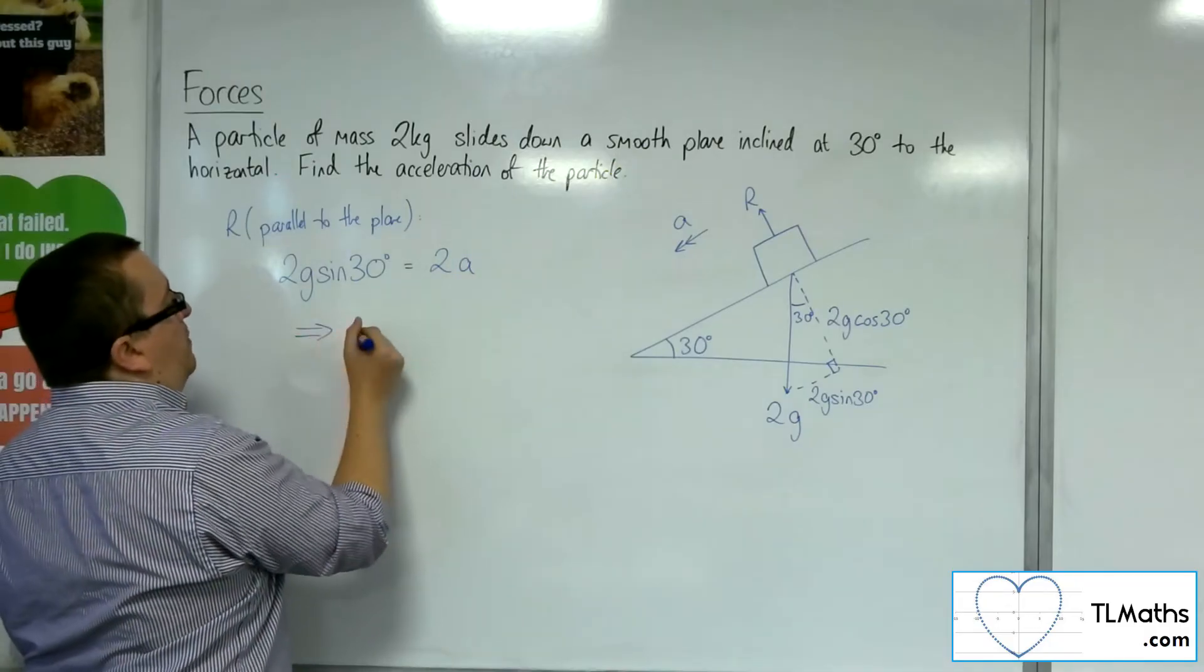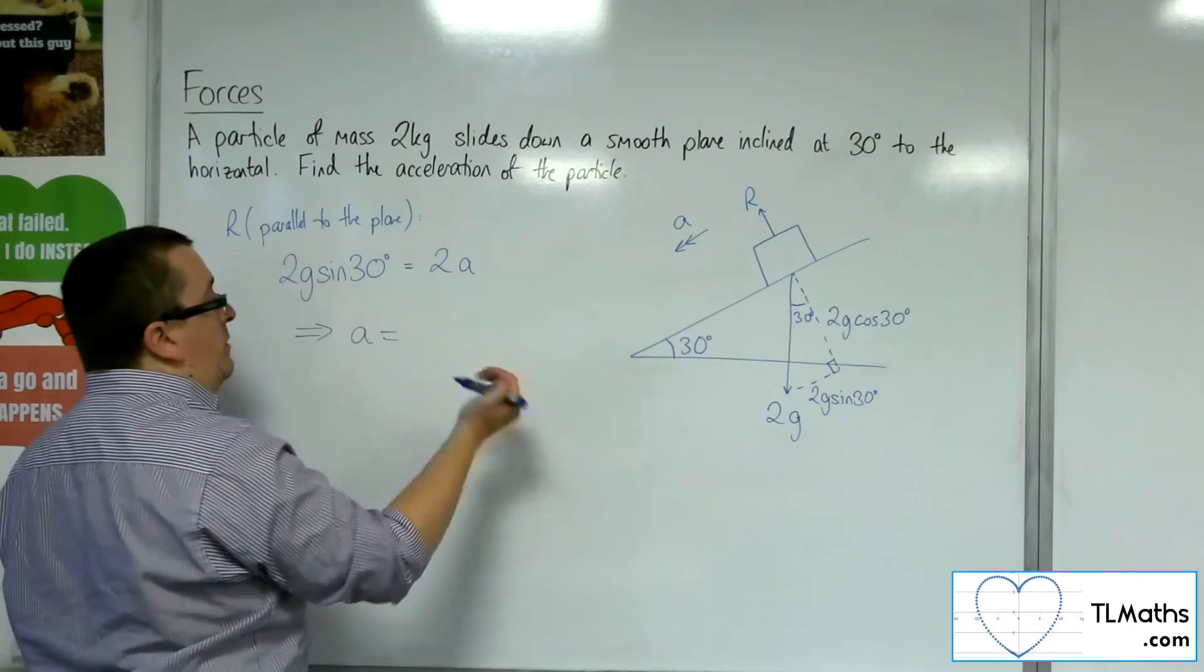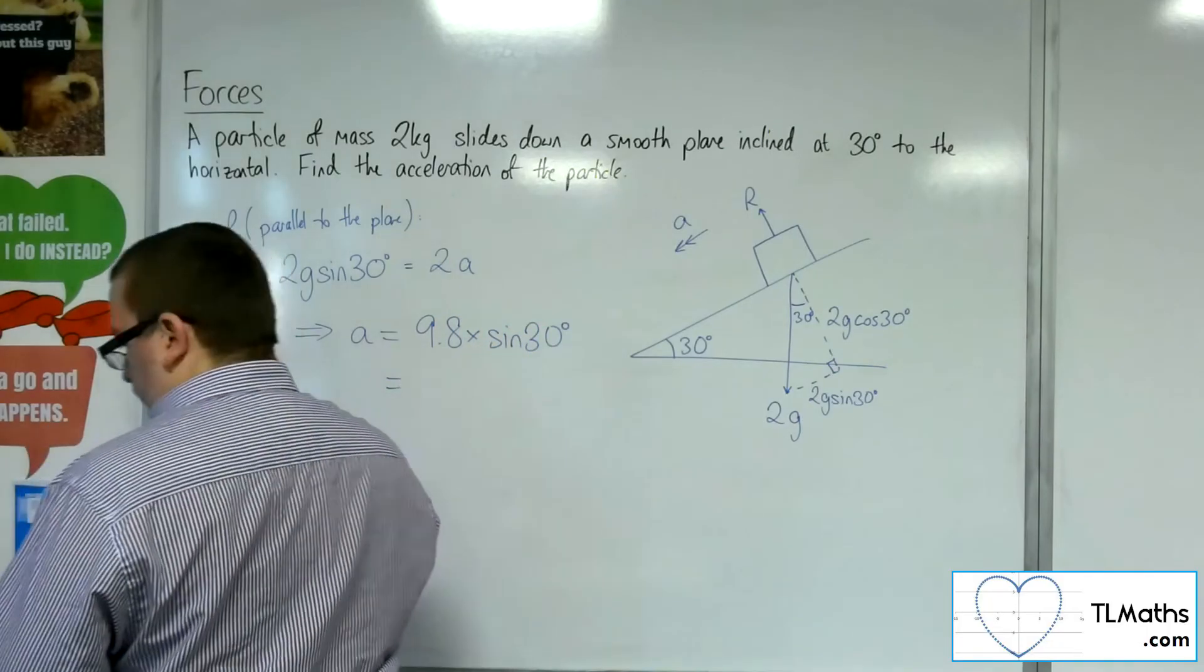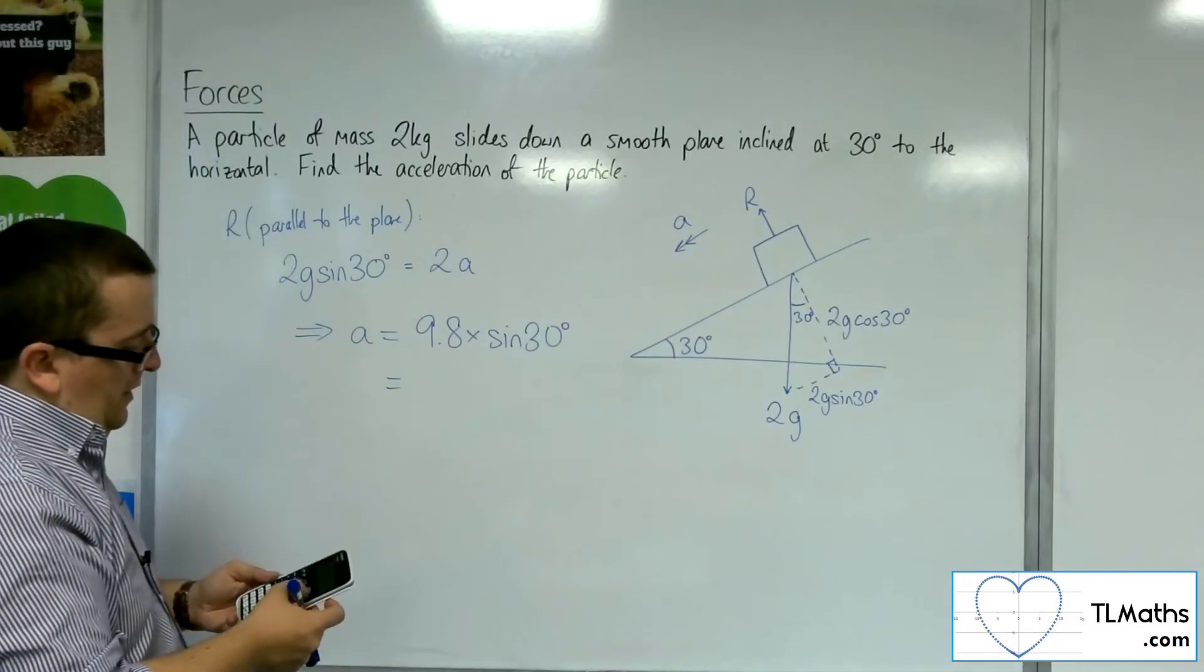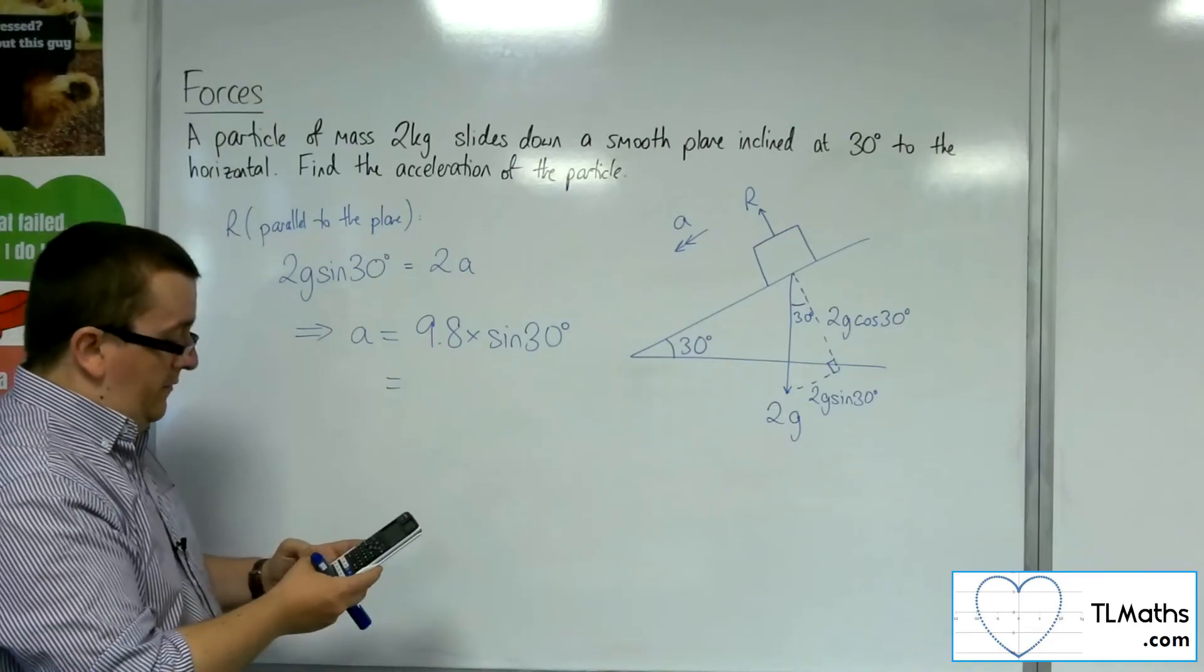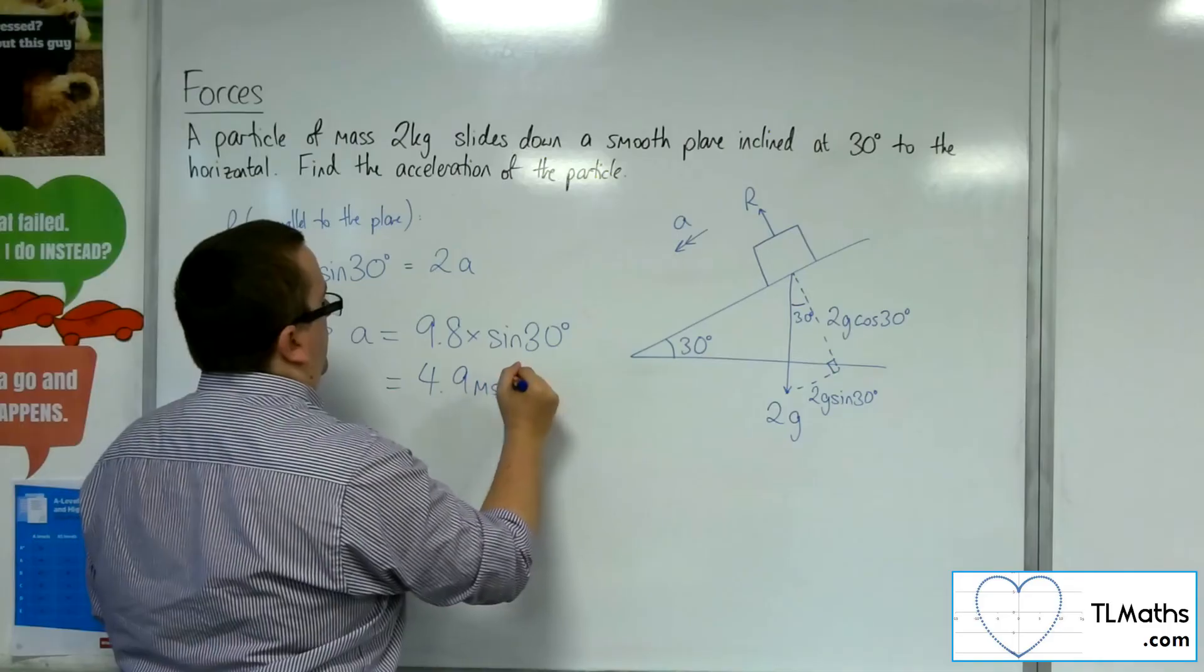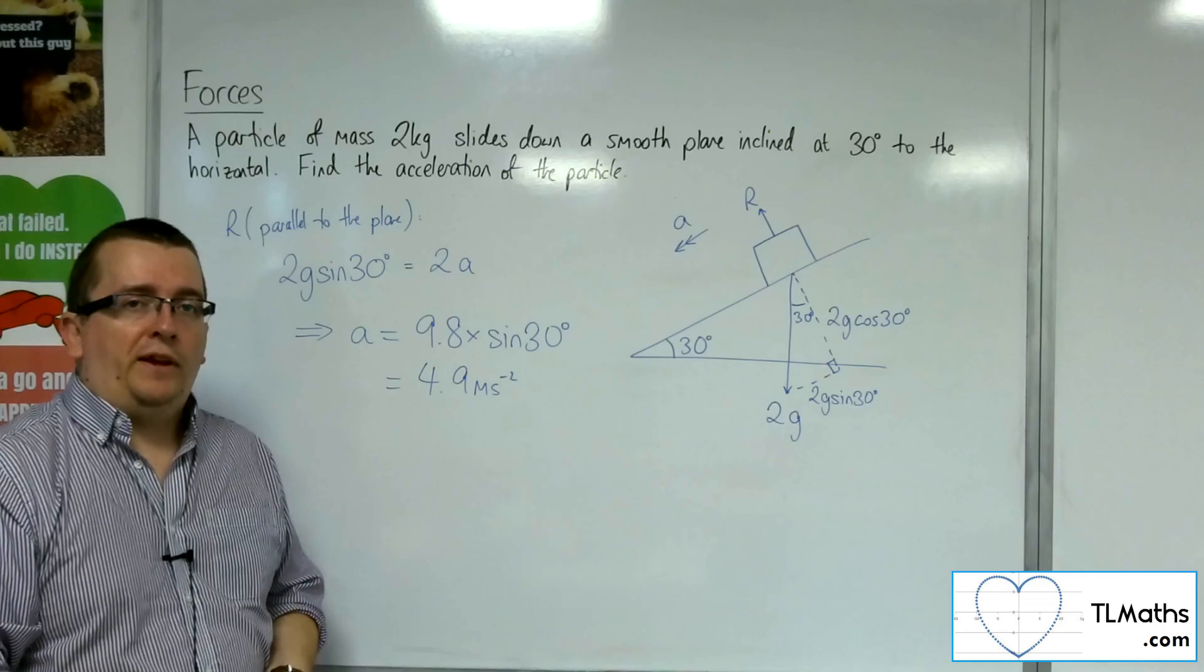So I could cancel the twos on both sides. And so the A is just G, gravity, which I'm going to take as 9.8, times sine of 30 degrees. So 9.8 times sine of 30, and that gets me 4.9. So the block will be accelerating at 4.9 metres per second per second.